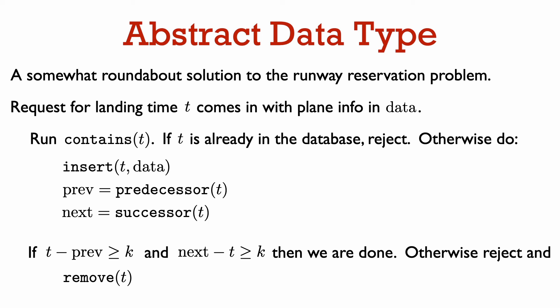Here is how we can solve the runway reservation problem via this abstract data type. When a request for landing time t comes in, we first check if the database already contains t using the contains function. If yes, then we reject the request. Obviously, we cannot have two planes landing at the same time on our single runway. If not, then we insert t and its associated data into the database. We then find the predecessor and successor of t. If t is at least k minutes from its successor and predecessor, then we are done. Otherwise, there is a conflict and we remove t from the database and reject the landing time request. This is a slightly roundabout solution to the runway reservation problem, but we do it this way to keep our abstract data type general and elegant.